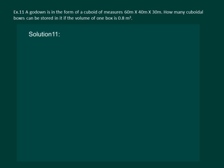Let us read the question. A godown is in the form of a cuboid of measures 60 by 40 by 30 meters. How many cuboidal boxes can be stored in it if the volume of one box is 0.8 meter cube?